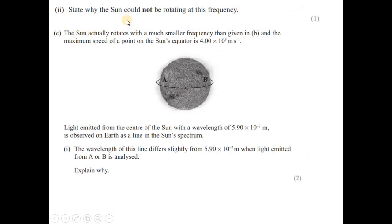State why the sun could not be rotating at this frequency. The reason is the velocity you calculated is 3.25 into 10 to the power 9 meter second inverse, which is greater than the speed of light, 3 into 10 to the power 8. That's why it is not possible.